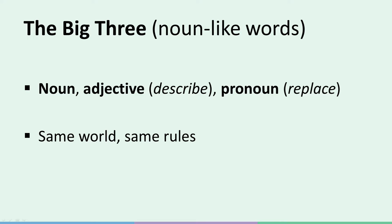All three operate within the same environment, the same world, so to speak — a world that's governed by the same rules. They're all subject to the same laws, and they share all of the grammatical characteristics, of which there are three. We refer to those as the big three: they are gender, number, and case. They are inherent characteristics. Whenever you're dealing with a noun, think gender, number, and case — those are the big three of noun-like words.